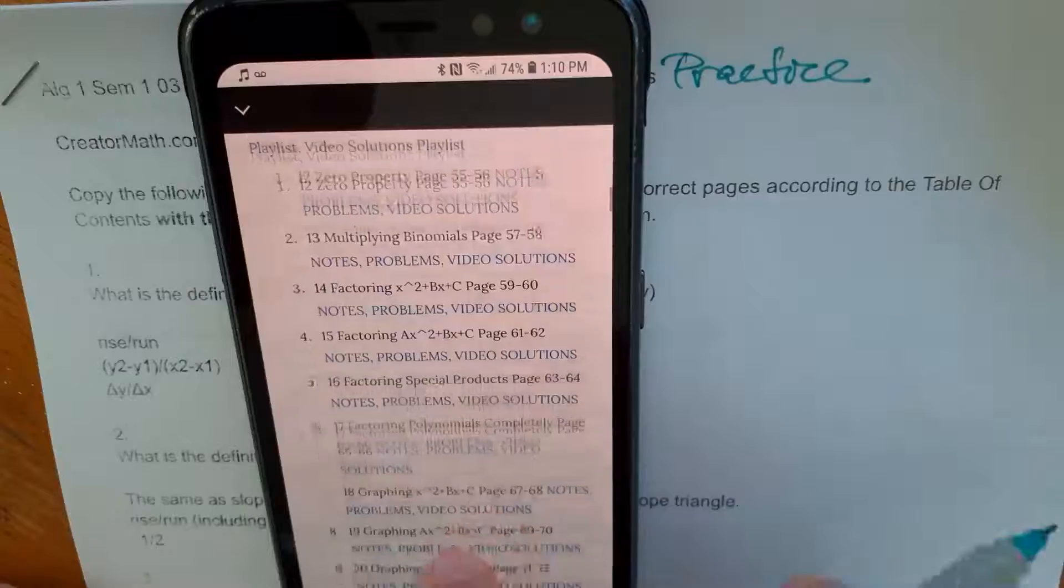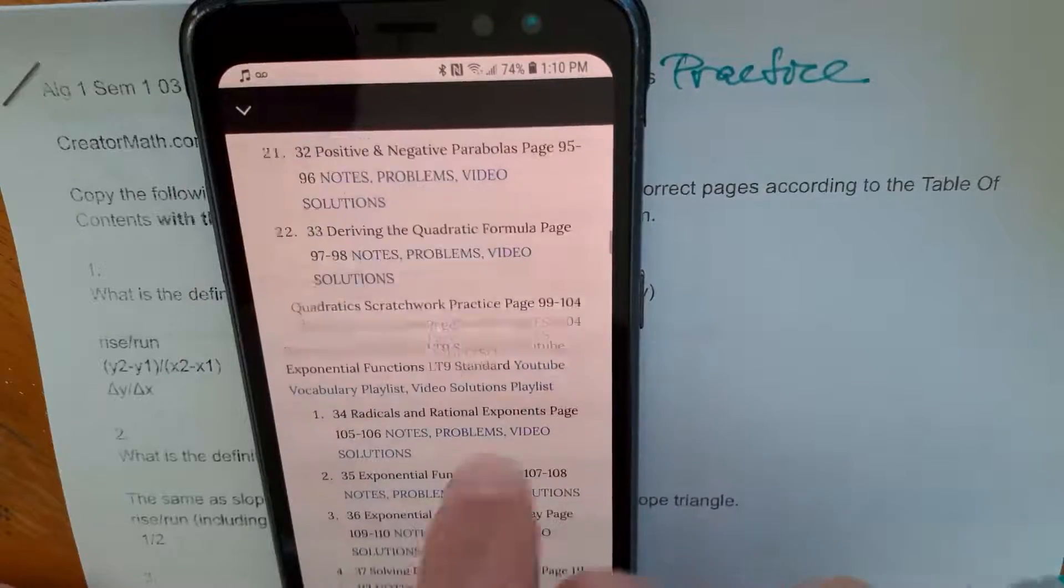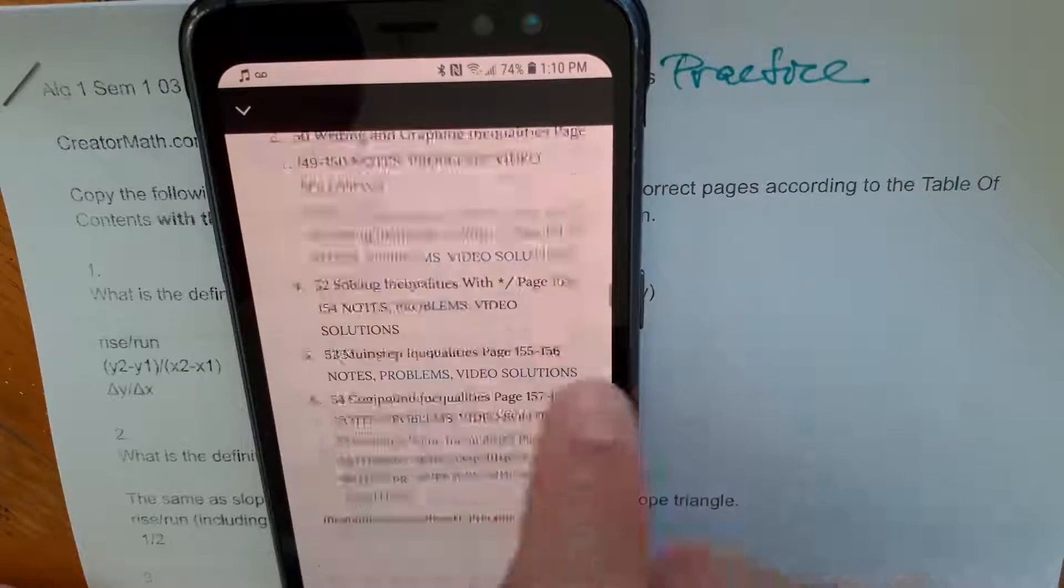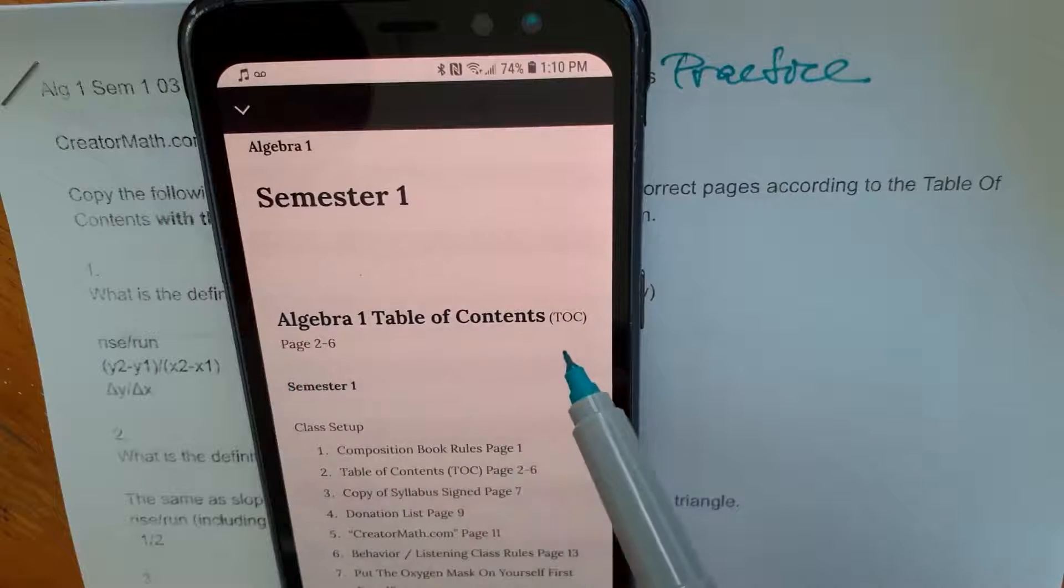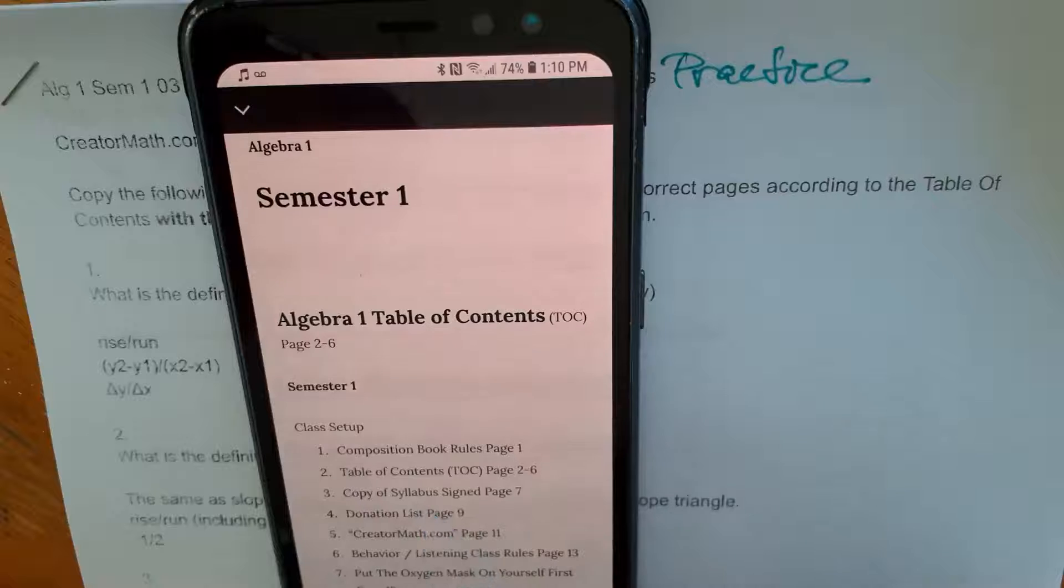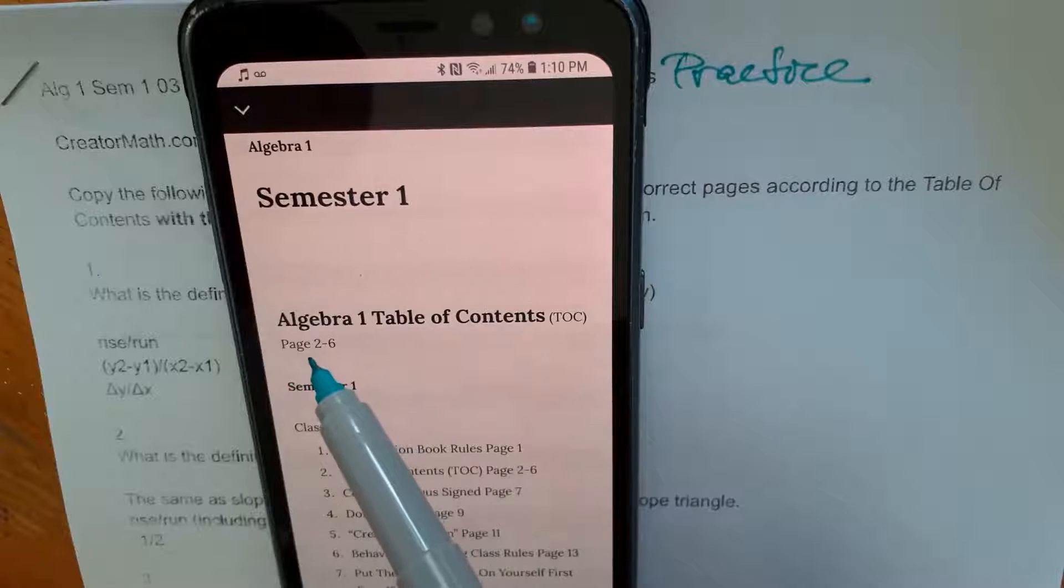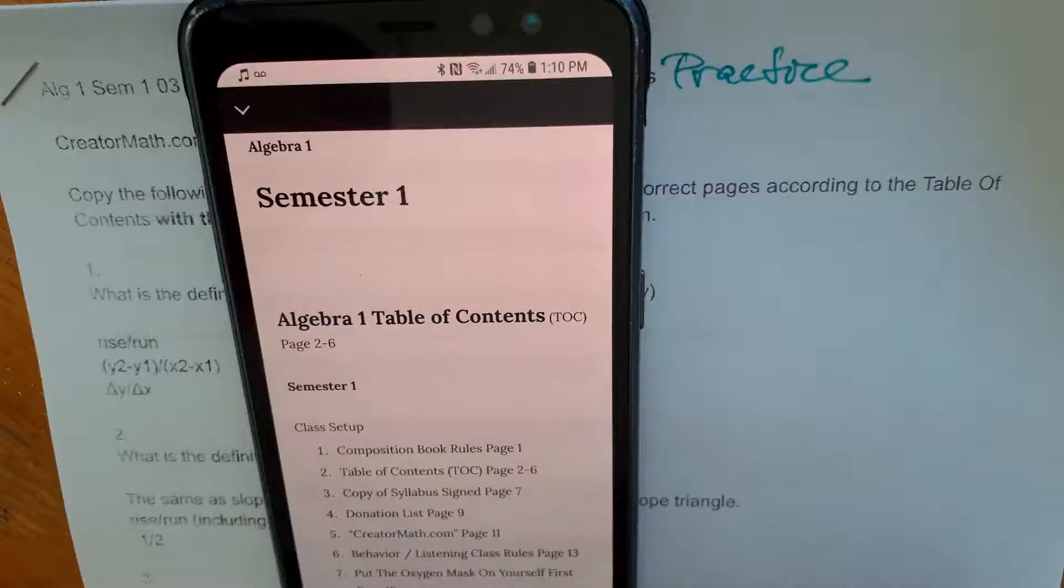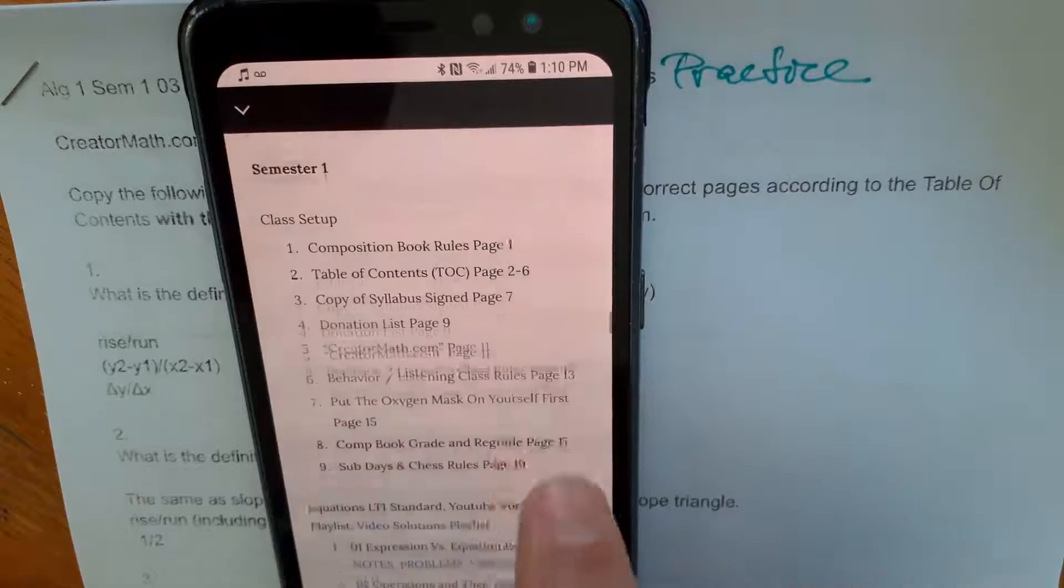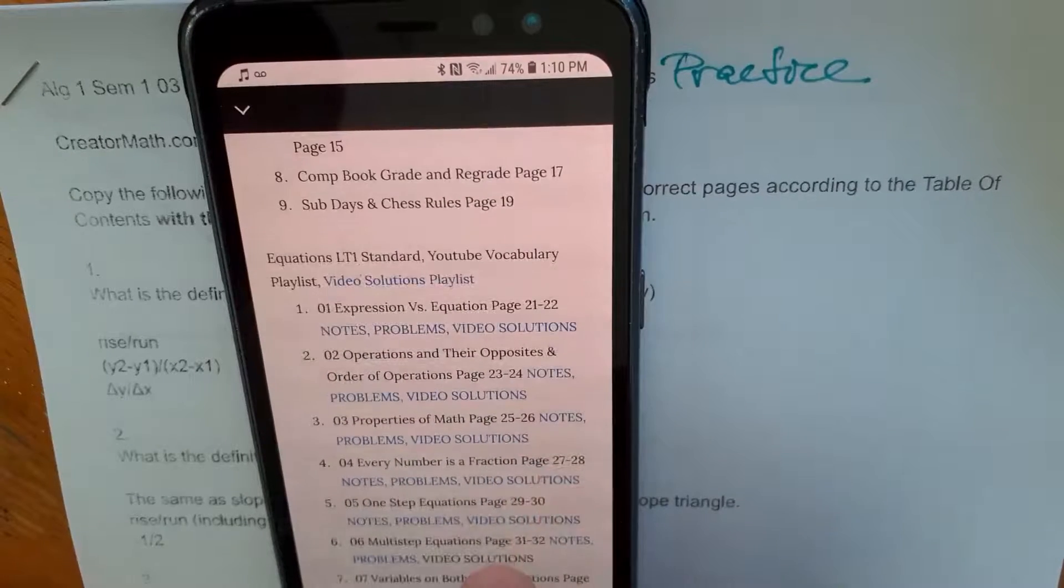Now, I'm going to scroll. Make sure you're scrolling to the semester for which is appropriate for you. In this case, we're scrolling to semester one. We're looking at the table of contents. Every line of this table of contents should have been written by you into pages two through six of your composition book. That way, you're going to know on what page everything goes. And we are now going to go to the unit we're in.